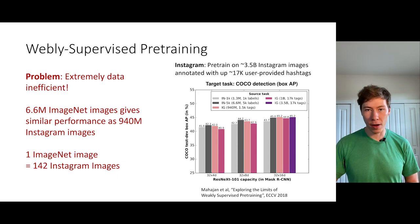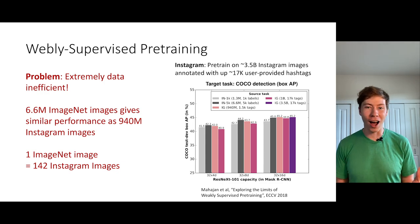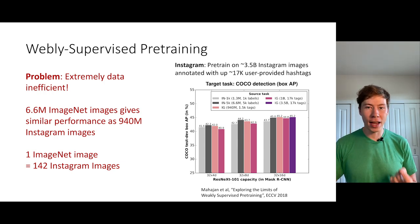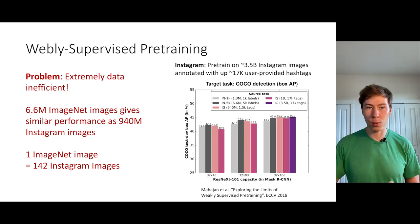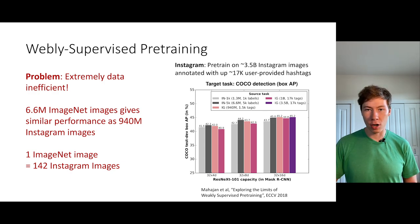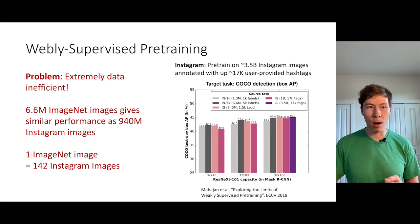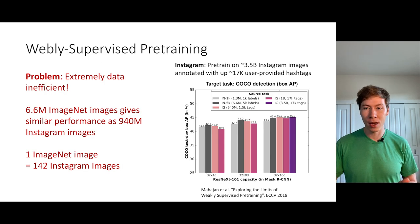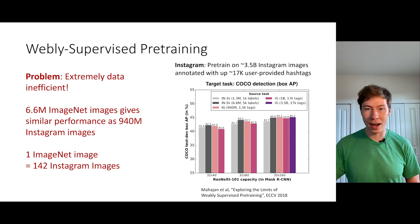The big problem with weakly supervised pre-training is that it is extremely data inefficient. You need to download a whole lot of these weakly supervised images with labels to get good results. For example, training on about 6.6 million ImageNet images gives similar performance on downstream classification as training on almost a billion images from Instagram. That means about one ImageNet image with an ImageNet label is worth about 142 Instagram images with their labels, making these weakly supervised pre-training setups extremely data inefficient.